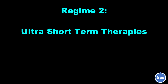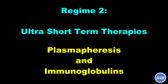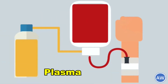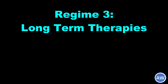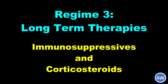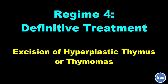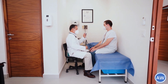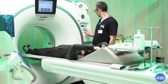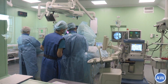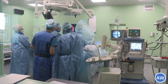The second mode of treatment includes ultra-short-term therapies like plasmapheresis and administration of immunoglobulins. Plasmapheresis literally washes off the anti-acetylcholine receptor antibodies in the blood. The third modality is long-term therapy with immunosuppressive drugs and corticosteroids like prednisolone. The fourth modality is definitive treatment by surgical excision of the hyperplastic thymus or thymomas. It should be remembered that management may require one or more of these modalities in combination, and the stage of disease, risk assessment, and the age and clinical status of the patient are all assessed to provide the best course of treatment.